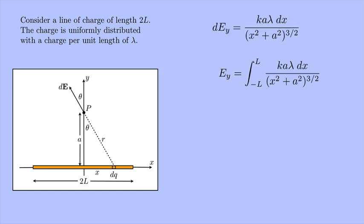So Ey, that would be the y component of the electric field, equals the integral from -L to L of k a λ dx over (x² + a²)^(3/2). Well, the k, the a, and the λ are all constants. And if I notice, again, from symmetry, that instead of integrating from -L to L, I could integrate from 0 to L and multiply it by 2. That would be just taking half of the line and then multiplying it by 2 to get the other half.